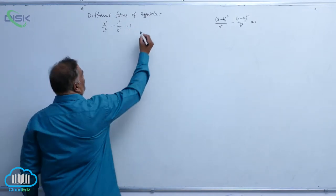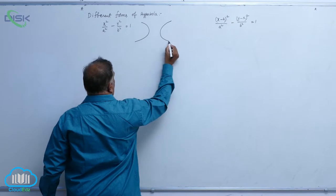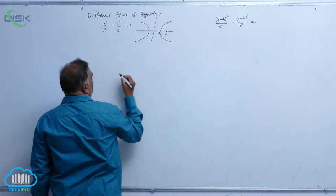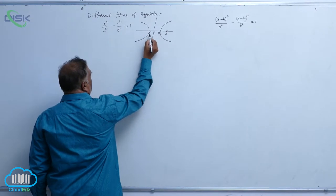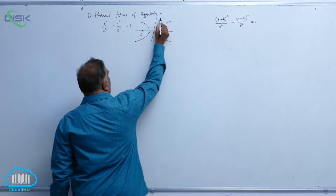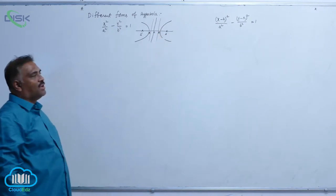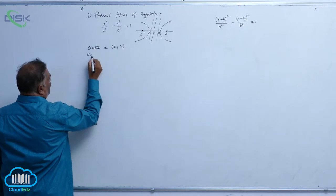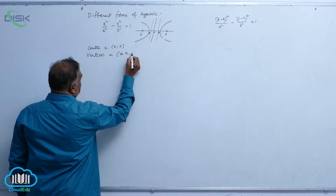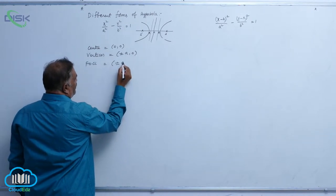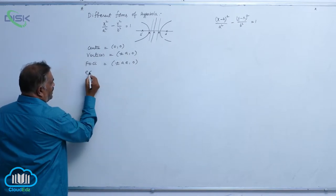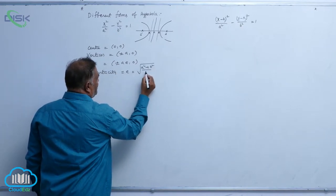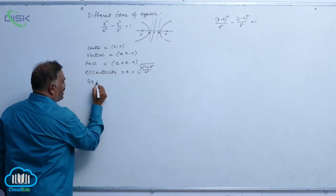We will look at different forms of the hyperbola. The standard hyperbola equation has a center, first vertex, focus, second vertex, and second focus, along with two directrices. The center is equal to (0, 0). Vertices are given by (±a, 0). Foci are given by (±ae, 0). Eccentricity is given by e = √(a² + b²) / a.